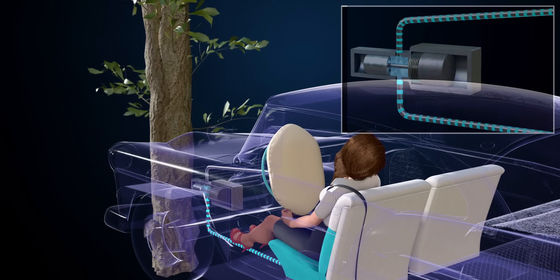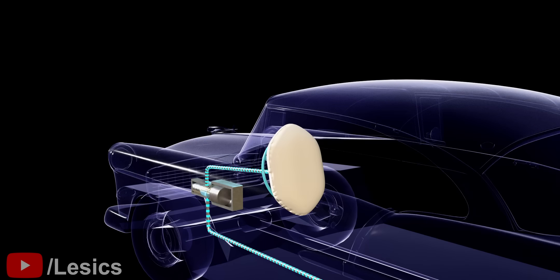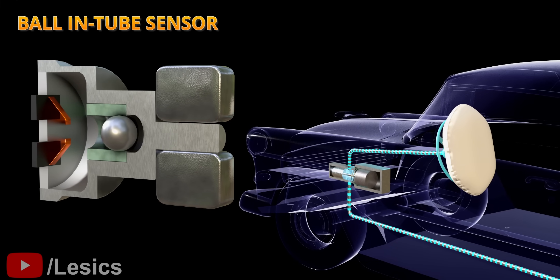The founder of Joyson Safety Systems, Mr. Alan K. Breed, came up with some groundbreaking inventions to solve these issues. First, he improved the accuracy of the sensor using a ball-in-tube sensor. In this sensor, a steel ball is held in position with the help of a magnet.